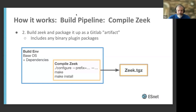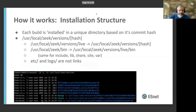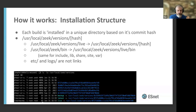That builds Zeek and outputs what GitLab calls an artifact — stored downloadable files in a simple tar.gz format. We don't just build it to install in /usr/local/zeek — we used to do that when building by hand. Now it's installed in /usr/local/zeek/version/hash, where that's the Git commit hash for that particular branch. So if you look at a screenshot of one of the systems and go into /usr/local/zeek/versions, you see all these different hash values, and then a symlink from 'live' to whatever the current live version of Zeek is. Logs and /etc we keep as static directories for consistent log rotation and archiving.